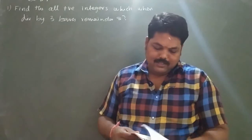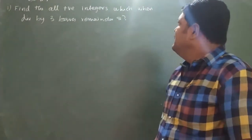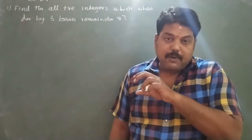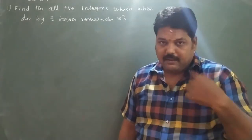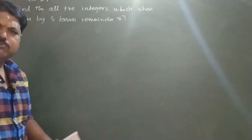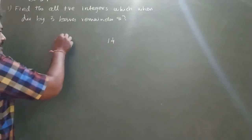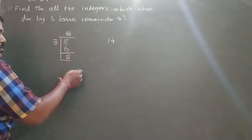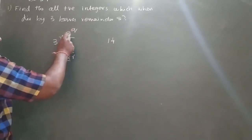Find all positive integers which when divided by 3 leave the remainder 2. All positive integers are the same. You need the remainder 2 to be available. This is the number, this is the divisor, this is the quotient, and this is the remainder.